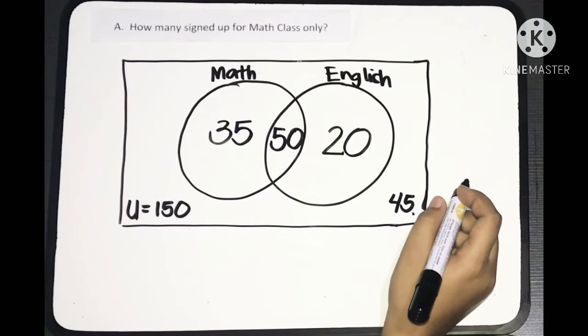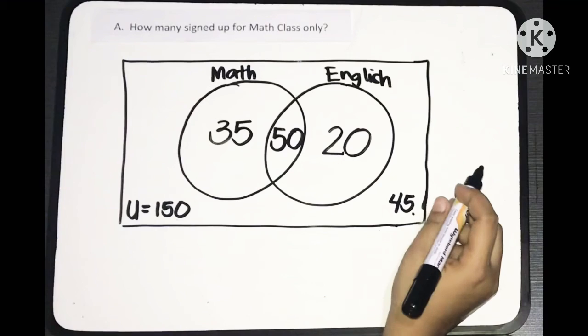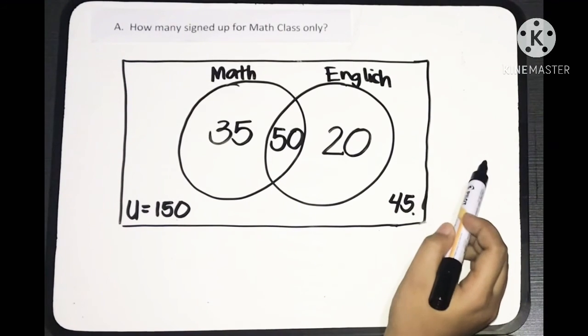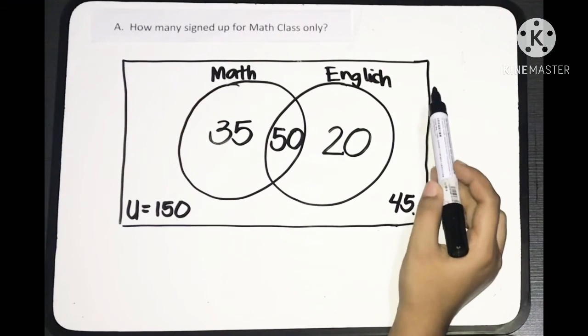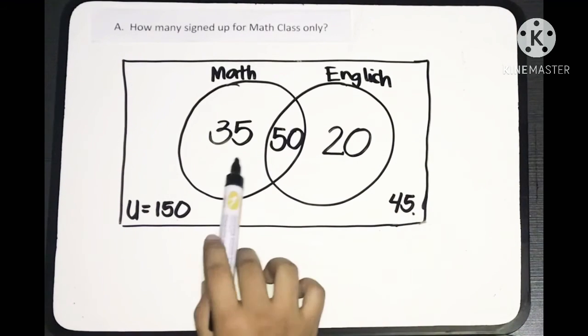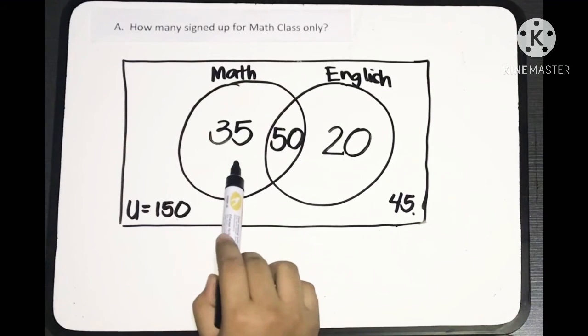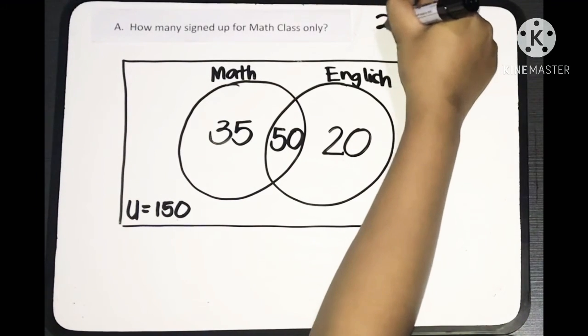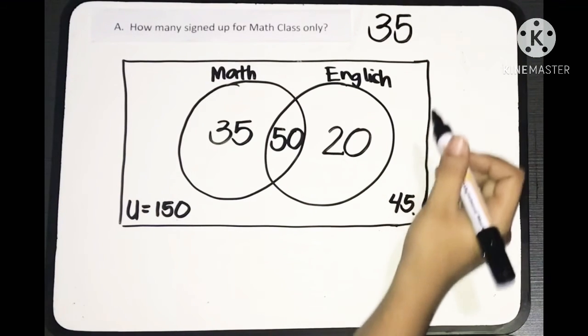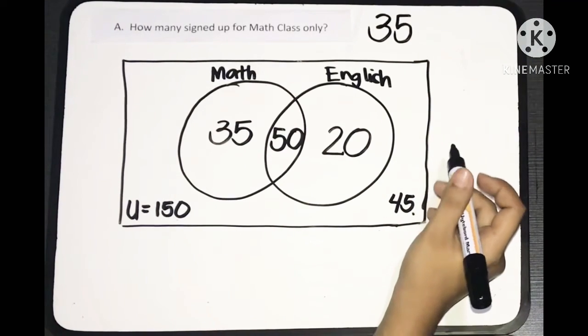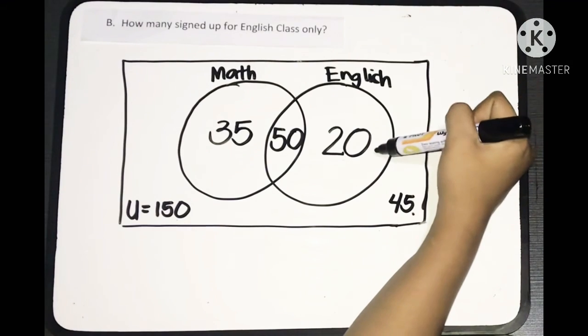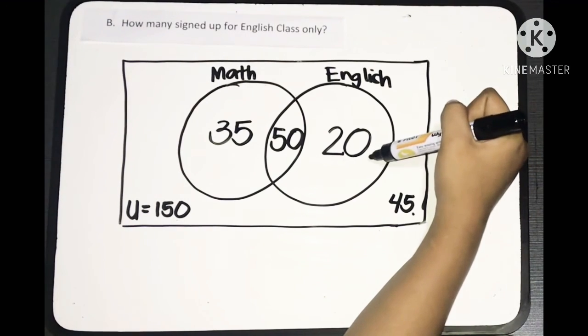Now, we can answer the other questions easily by just simply looking at the Venn diagram. There are only 35 students who signed up for math class only. Next question: How many signed up for English class only? Let's look at the Venn diagram. The answer is 20.